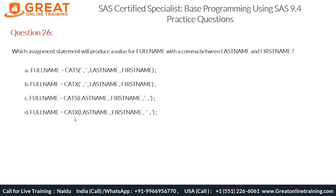The fourth option — full name equals CATX of last name, first name, comma — also concatenates the last name and first name without correctly placing the comma between them, because the comma is present as the last argument. For the CATX function, the comma should be the first argument, so option D is also wrong.